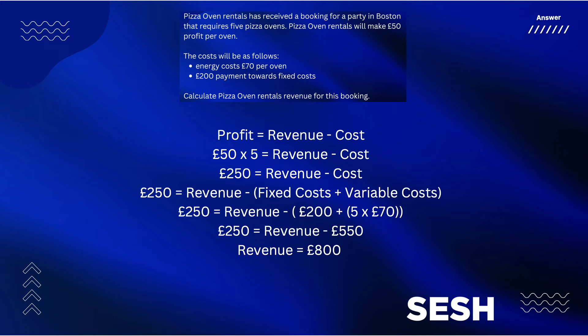With costs, always make sure you split costs into fixed costs and variable costs and deal with each separately. Fixed costs are given to you in the question: £200. Variable costs are those energy costs — £70 per oven, and there are five ovens, so five times 70 is £350.